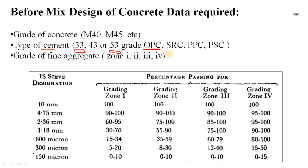Not only OPC — if you use PPC, that means Portland Pozzolana cement, or Portland slag cement, or sulphate resisting cement — these are different types of cement with special properties that affect your mix design a lot. Before starting the mix design, you should be sure about which type of cement you are going to use in your casting program.